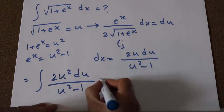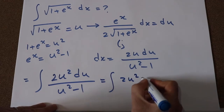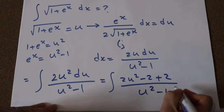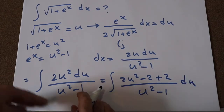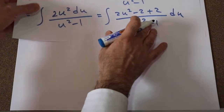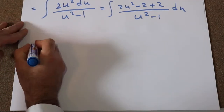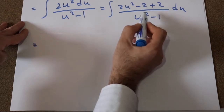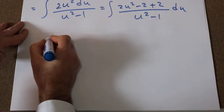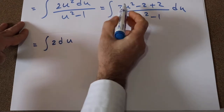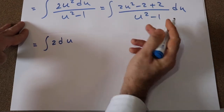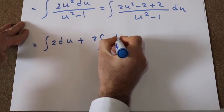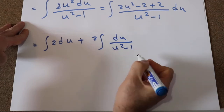You can rewrite this integral as the integral of 2u² minus 2 plus 2, all divided by u² minus 1, du. Now you can expand this expression: 2u² minus 2 divided by u² minus 1 equals 2, so this becomes the integral of 2 du plus 2 times the integral of du divided by u² minus 1.